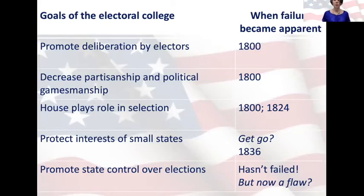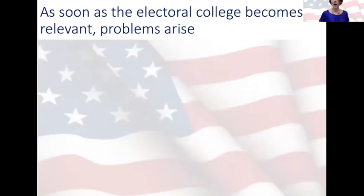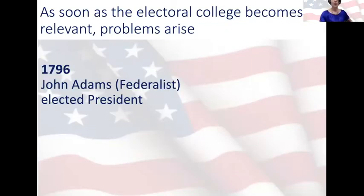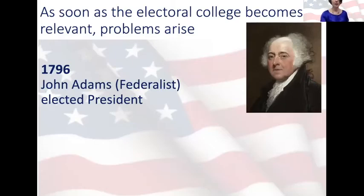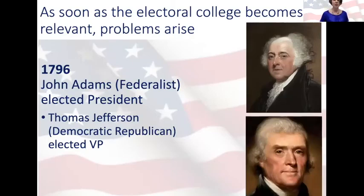Almost right out of the gate, the Electoral College created problems. In 1796, John Adams won a majority in the Electoral College and became president. But because of the strange method of selecting a vice president — it just went to the runner-up — his arch nemesis Thomas Jefferson, from the opposite party, became Adams' vice president. Adams was a Federalist; Jefferson was a Democratic Republican. Thomas Jefferson spent his four-year tenure as Adams' vice president mainly at Monticello, organizing the Democratic Republicans' opposition to the Federalists and to the Adams administration.